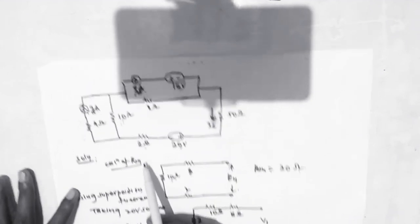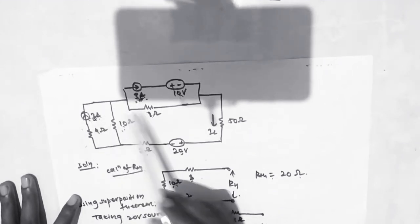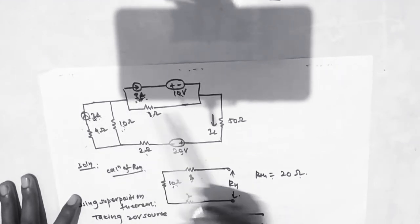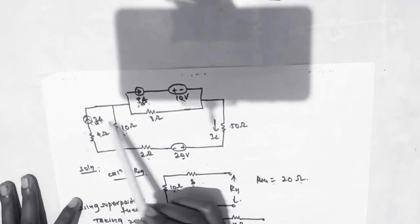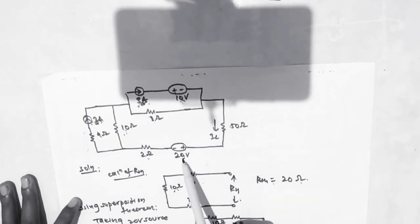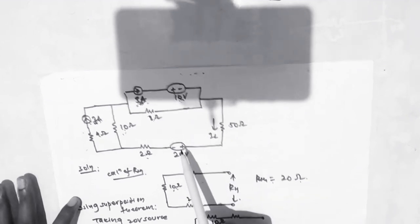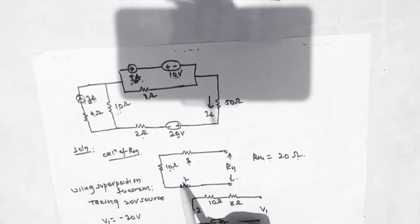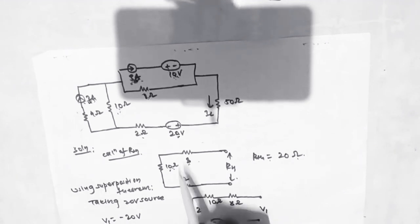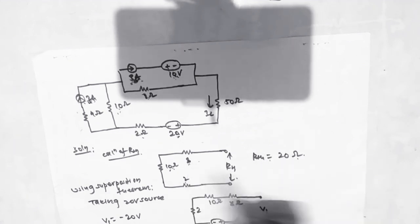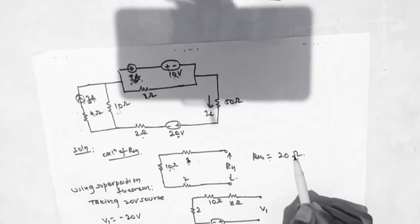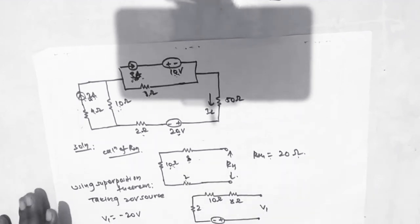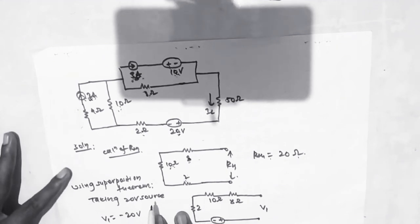To calculate RTS, all current sources will be open circuited and the voltage sources will be short circuited. So we open the 3 ampere, 2 ampere, and the other 2 ampere current sources, and short circuit the 10 volt and 20 volt voltage sources. The resulting circuit has 2, 10, and 8 ohm resistors in series, so RTS equals 2 plus 8 plus 10 equals 20 ohms.